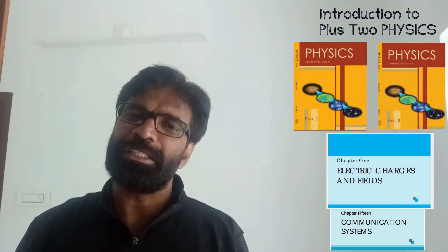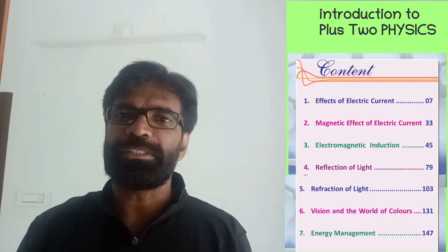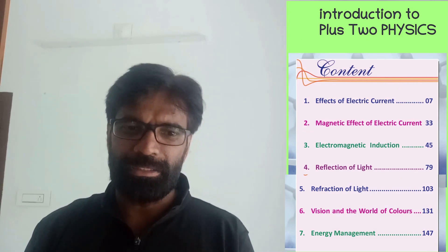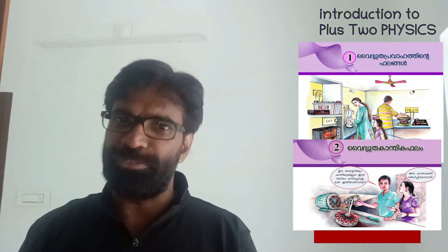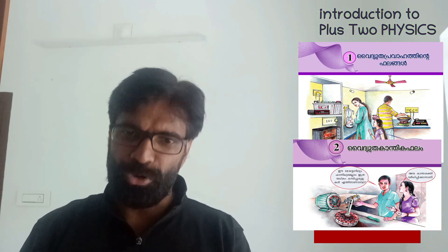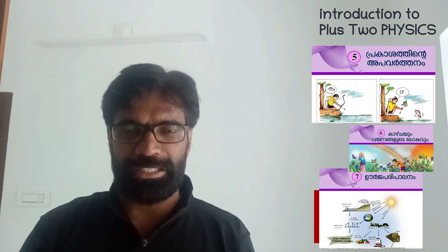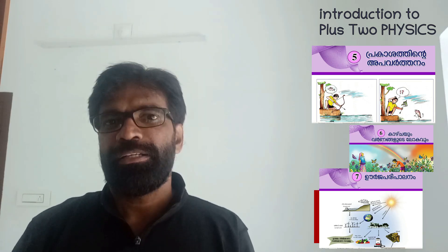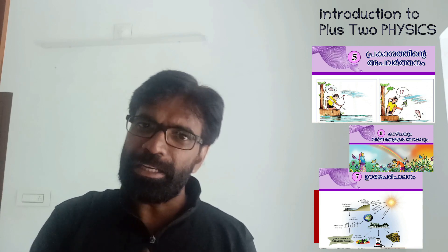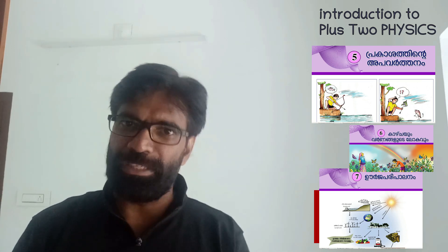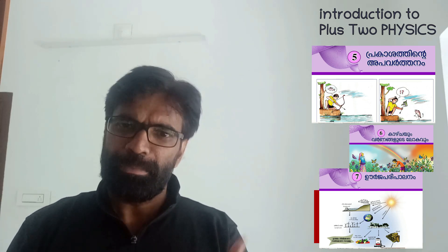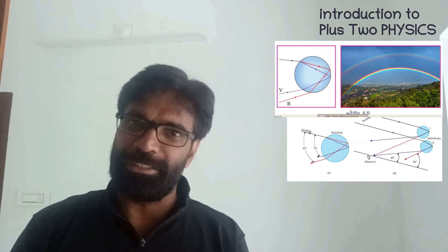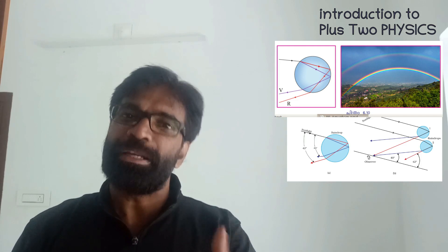In this chapter, we have topics from the 10th chapter as well: the electric bulb, the effects of electric currents, the magnetic effect of electric currents, the generator, the mirror, image formation, mirrorless light, reflection of light, the prism, and the basic principle of the earth.